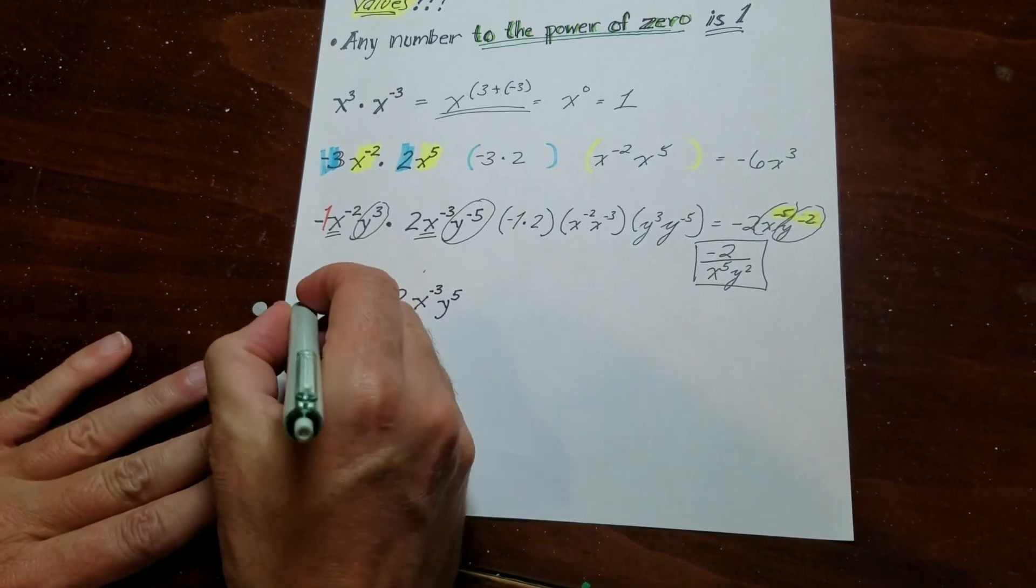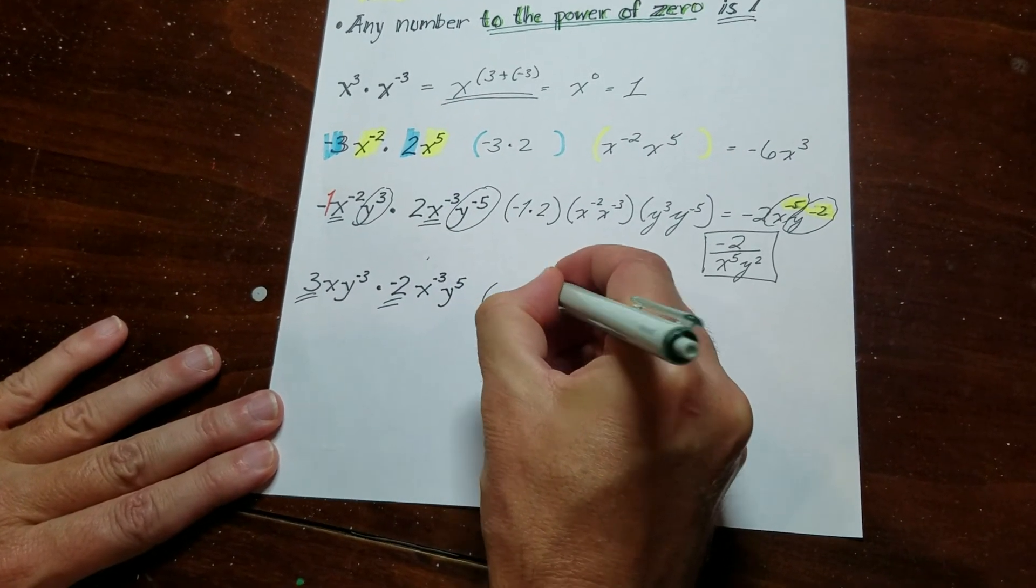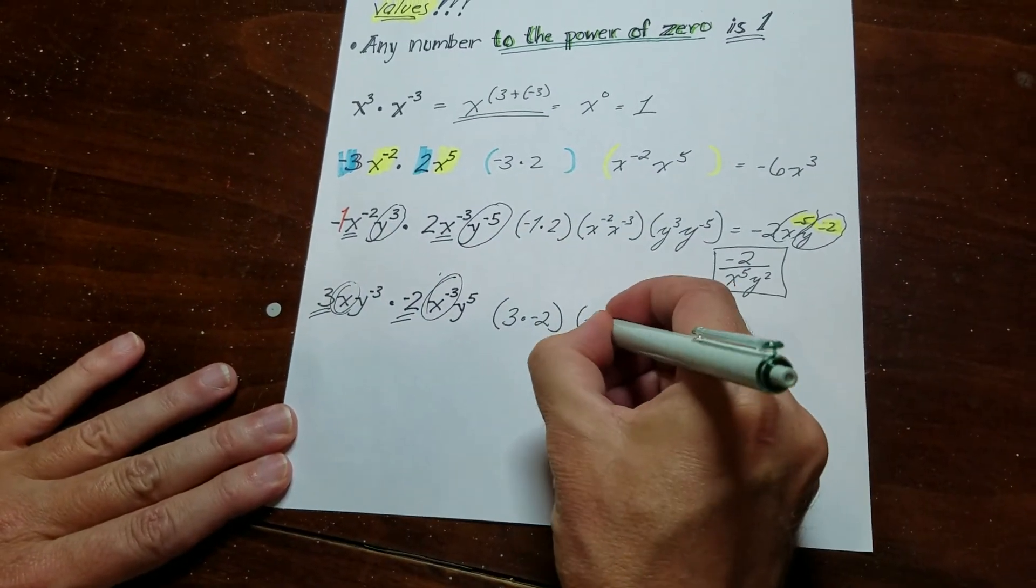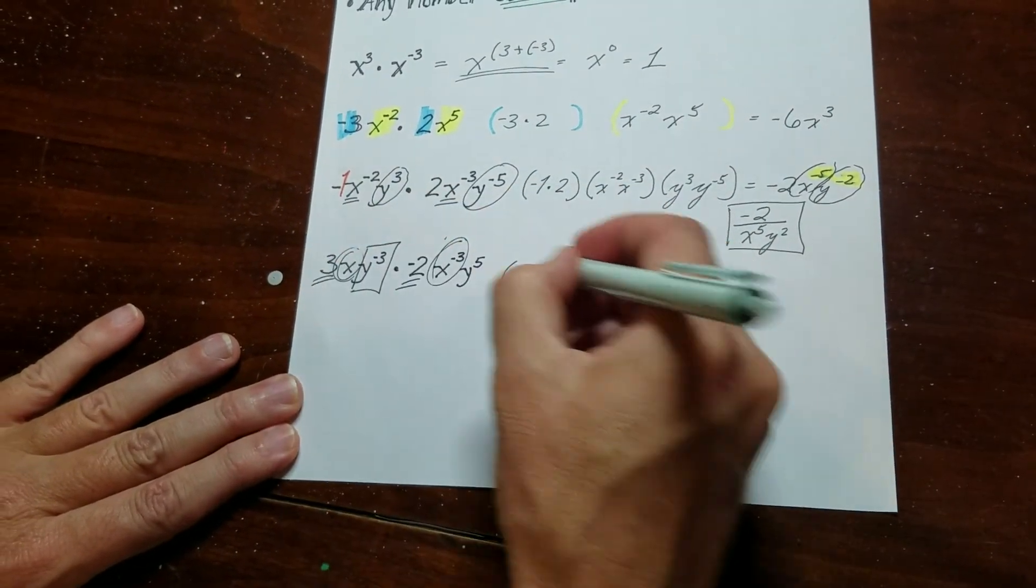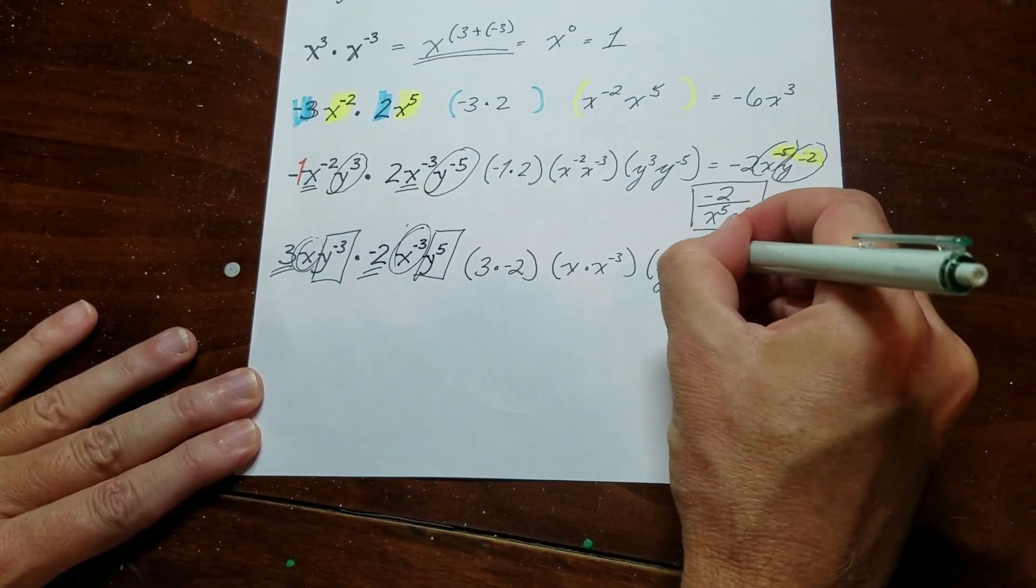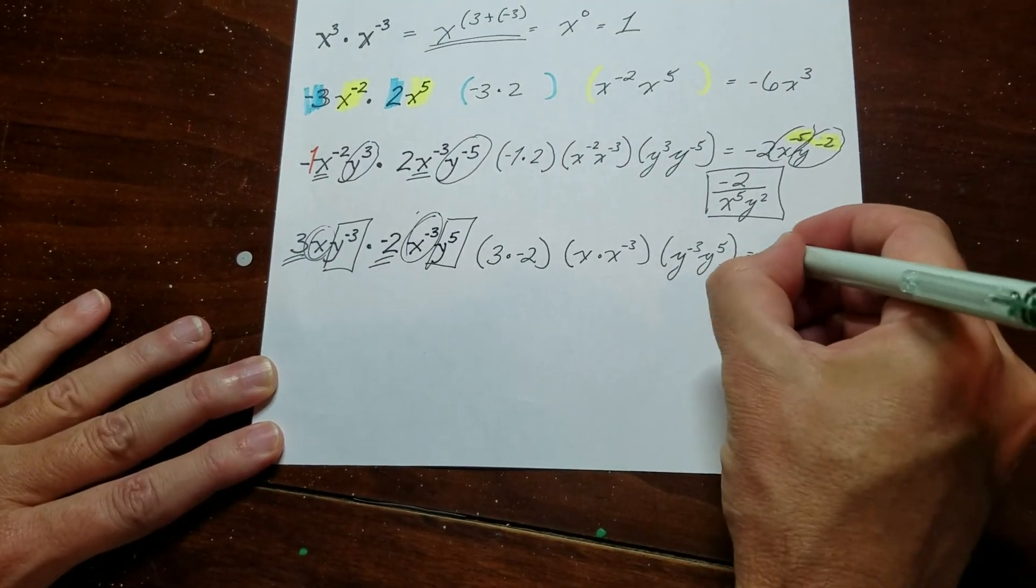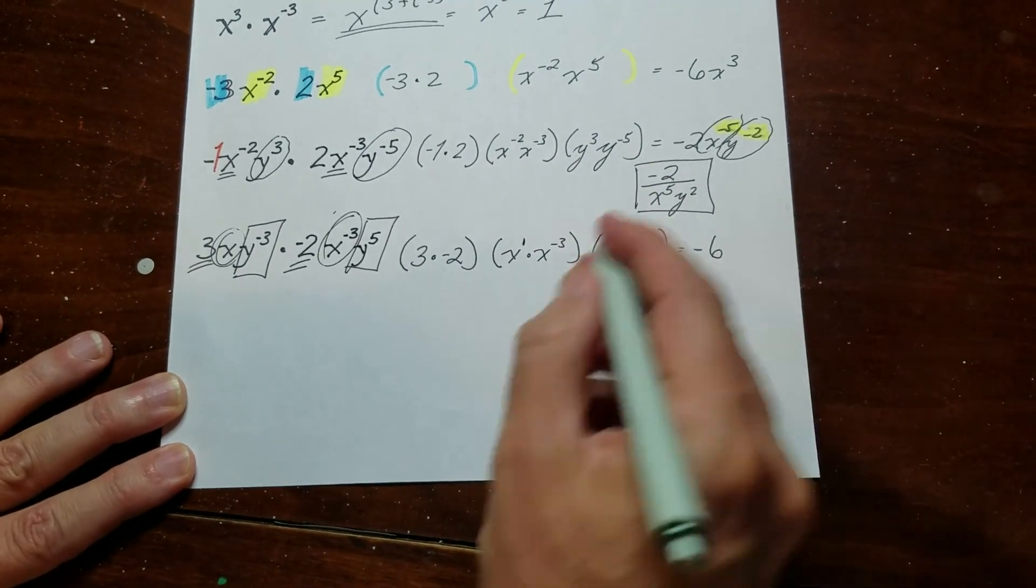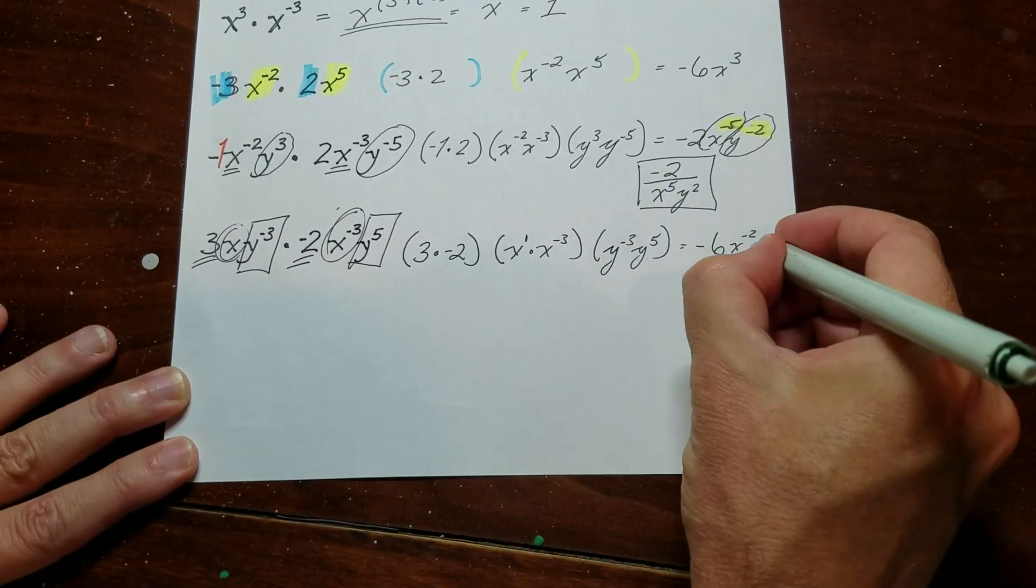Let's look at this last example. So I have a 3, and I have a negative 2, so I'm going to go ahead and group those guys up here. I have an x, and I have an x to the negative 3. And I have a y to the negative 3 and a y to the 5. So when I add these up, this here is going to be a negative 6. This is going to come to x. This is a 1, because there's nothing there, so that's a negative 2. And this is going to be a negative 3 plus 5, so that's y to the 2.